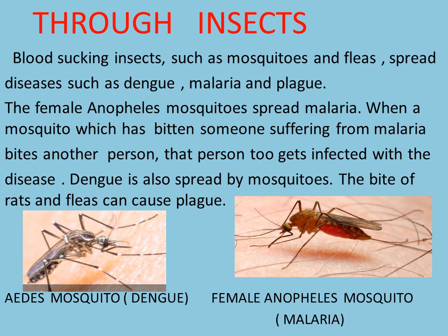Through insects. Blood sucking insects such as mosquitoes and fleas spread diseases such as dengue, malaria and plague. The female Anopheles mosquitoes spread malaria. When a mosquito which has bitten someone suffering from malaria bites another person, that person too gets infected with the disease. Dengue is also spread by mosquitoes. The bite of rats and fleas can cause plague.